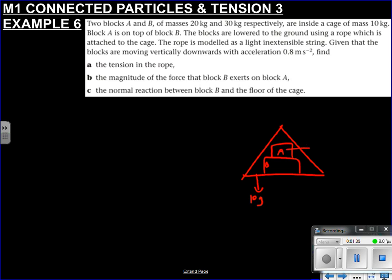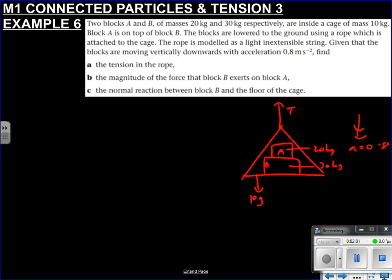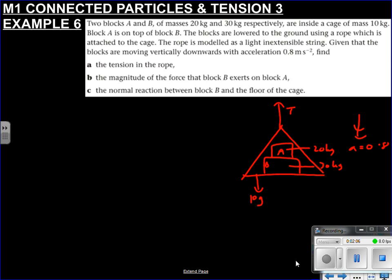So like before, this is B and this is A. And we know that this is 20kg and this one is 30kg. The blocks are lowered to the ground using a rope, so I've got a rope on there, there's tension. And the rope is modeled as a light inextensible string, moving down vertically with acceleration 0.8 m/s². The calculator's out. I haven't drawn all the forces on here yet, but because we don't know what we're dealing with.